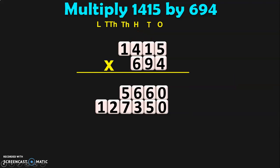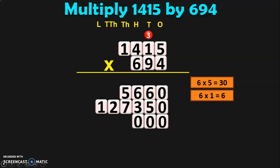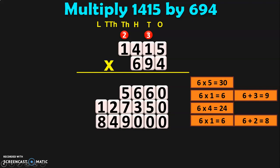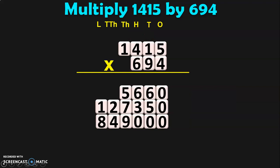Next, we will have to multiply 1415 by 600, because the third digit 6 is in the 100s place. So, we will have to add 2 zeros: one in the 1s place and another 0 in the 10s place. Begin the multiplication. 6 into 5 is 30 — 0, carry over 3. 6 into 1 is 6, plus 3 is 9. So 9 will be written in the 1000s place. Next, 6 into 4 is 24 — 4, carry over 2. And 6 into 1 is 6, plus 2 is 8. So 8 will be written in the lakhs place.